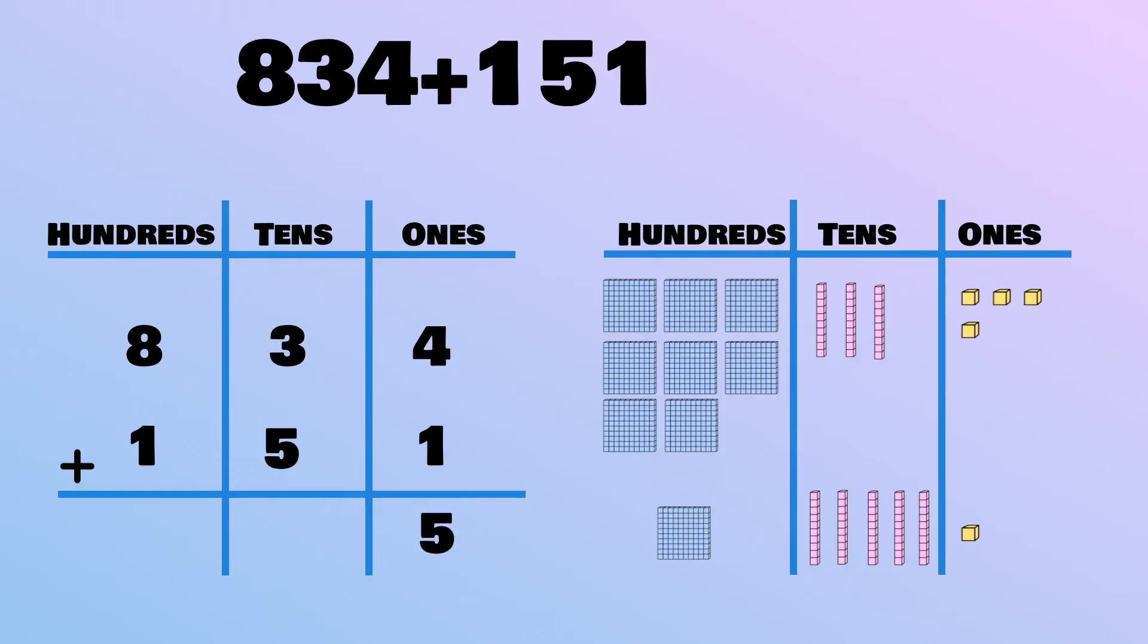Now, which place value spot do we count next? The tens place. 1, 2, 3, 4, 5, 6, 7, 8.